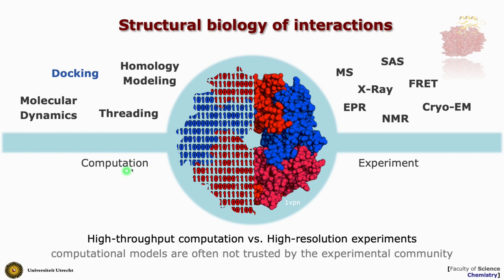On the computational side, there are different ways of looking at complexes. You can try to generate them by homology modeling, provided there is enough information in the protein database. We have over 170,000 structures in the PDB, but only around 6,000 to 7,000 real biological complexes represented there — a small subset of the interactome, which in humans has a size of several hundred thousands. Other methods like molecular dynamics and docking are also used, and docking is central to this lecture.